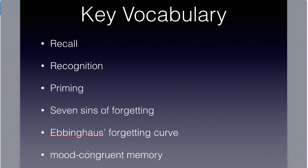Mood congruent theory is kind of cool — we remember things based on the mood we're in. When we're happy, we remember all the good times with a boyfriend or girlfriend: how awesome they are, all the times they bought you roses. When we're mad, we remember all the bad things they've done. So mood congruent means we tend to have memories based on the mood that we're currently in.